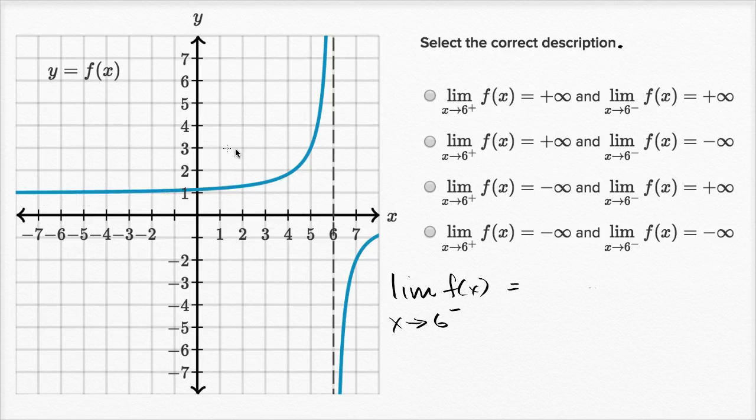As we approach from the left-hand side, we can see f of four is a little under two, f of five looks like it's around three, f of 5.5 looks like it's a lot higher, f of 5.75, it's just going off the charts. So it looks like this is going unbounded in the positive direction. So we could say that this right over here is positive infinity.